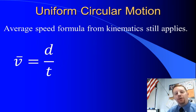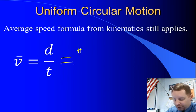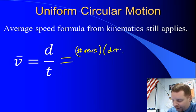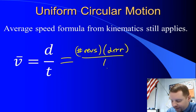In this case, though, because the object is moving in a circular path, the distance is going to be however many number of revolutions times the circumference, the distance around the circle, 2πr divided by t.